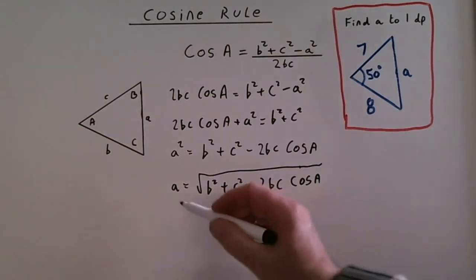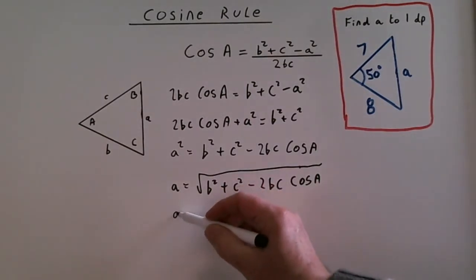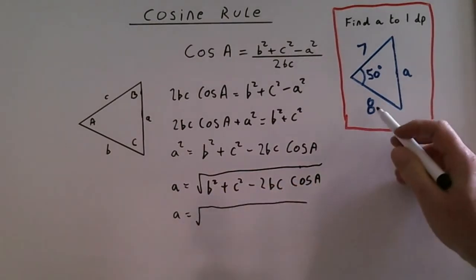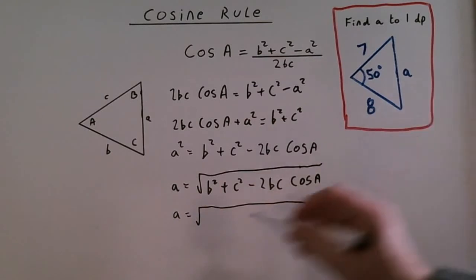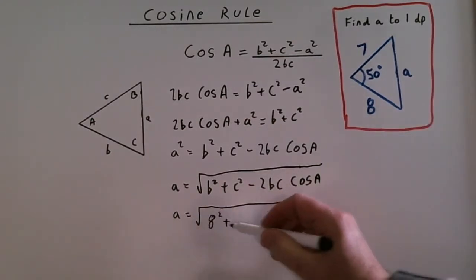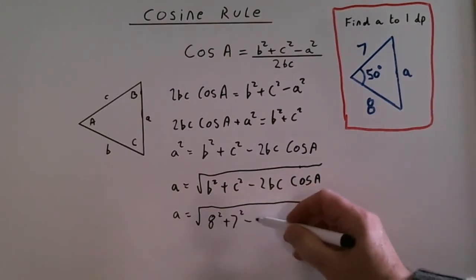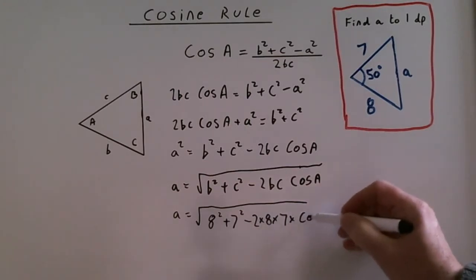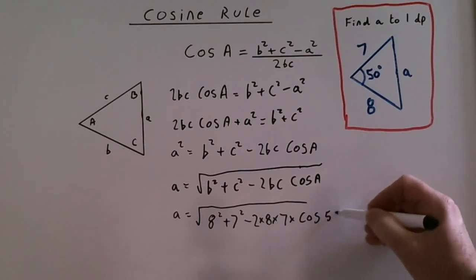One more thing before I use the calculator, I'll just put all the numbers in. A equals square root, and we just read it all off of here. That's b, 8 squared, and c, 7 squared, minus 2 times b again, which is 8, times 7, times the cosine of 50 degrees.